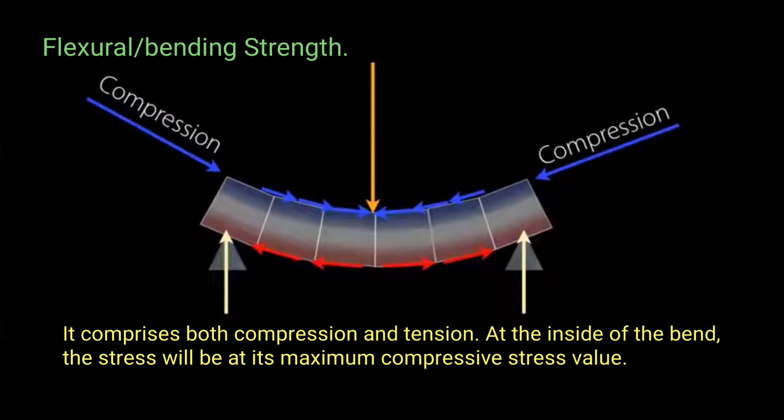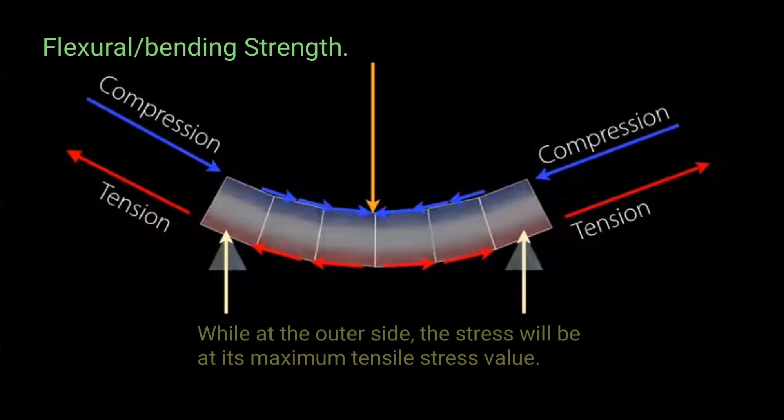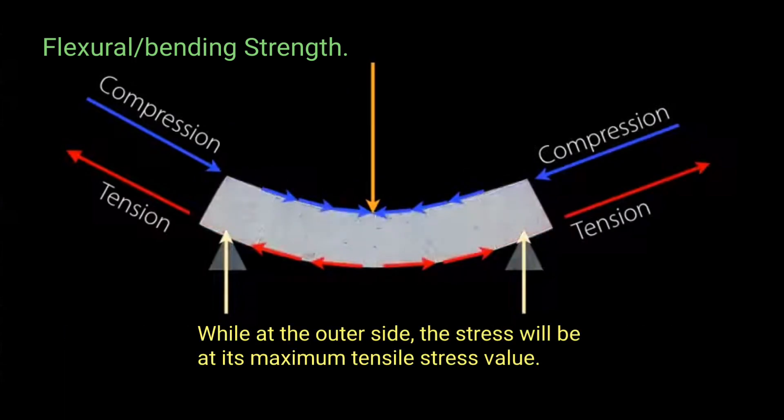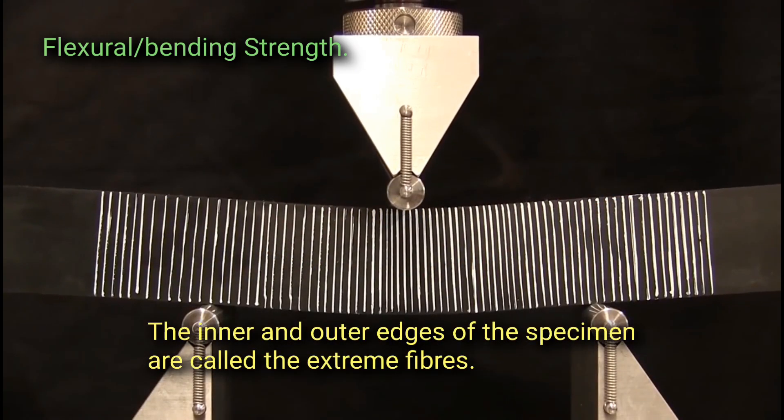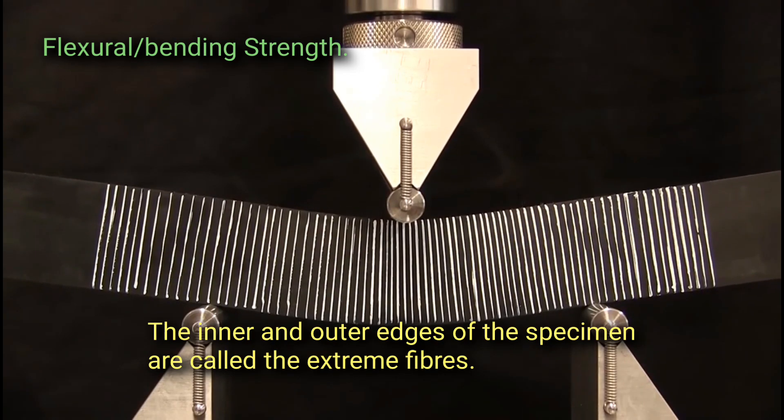It comprises both compression and tension. At the inside of the bend, the stress will be at its maximum compressive stress value, while at the outer side, the stress will be at its maximum tensile stress value. The inner and outer edges of the specimen are called extreme fibers.